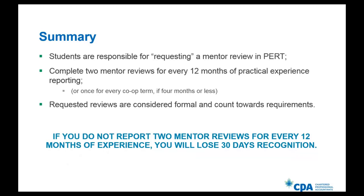For example, if you had 12 months of current experience in PERT and no mentor reviews, you should have had two mentor reviews, so you would be required to add 60 days to your experience requirement, making your minimum 32 months instead of 30. The assessor will also assess whether your mentor reviews are appropriate. If two mentor reviews are completed within a couple of days of each other just to meet the requirement, we will not deem this appropriate. The minimum duration between mentor reviews that we consider appropriate is 60 to 90 days.